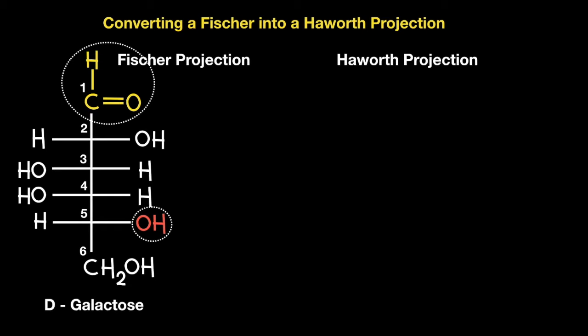In short, these two functional groups react to form an intramolecular bond that connects carbon number 5 to carbon number 1, thus establishing the cyclic structure known as a Haworth projection.